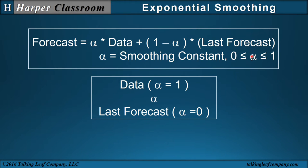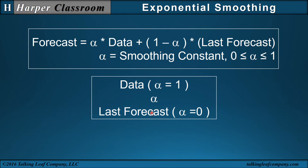Alpha ranges between zero and one. If alpha is one, then one minus one is zero — the last forecast is ignored, and my forecast for tomorrow is just whatever I observed today. If alpha is zero, then the data is ignored and my forecast for tomorrow is just whatever forecast I have for today. As alpha ranges between zero and one, my forecast will range between the last forecast and the data I observed today.